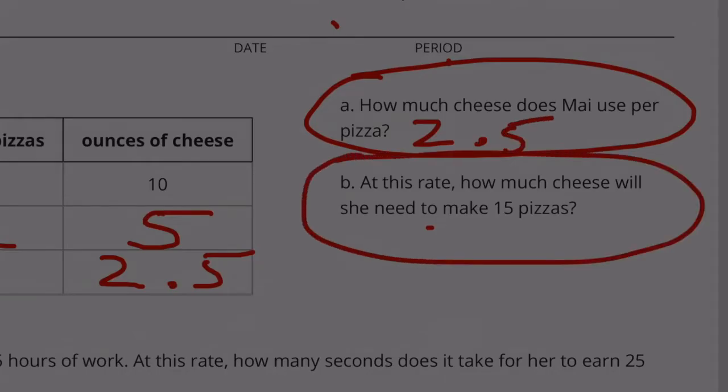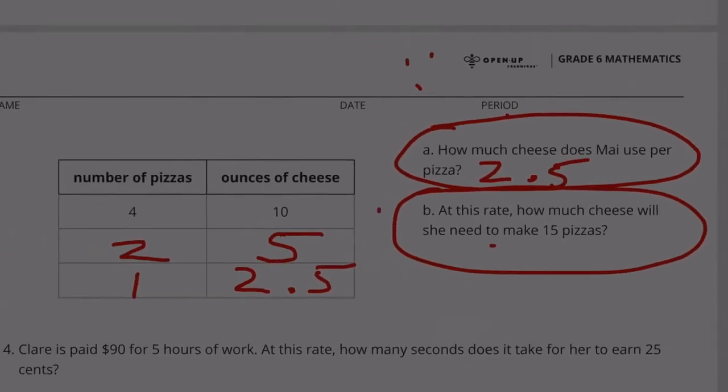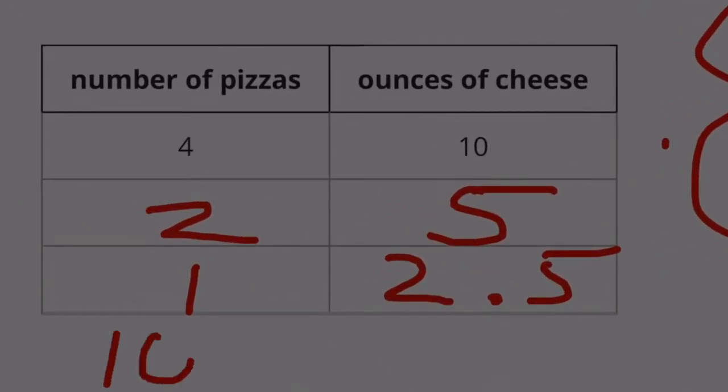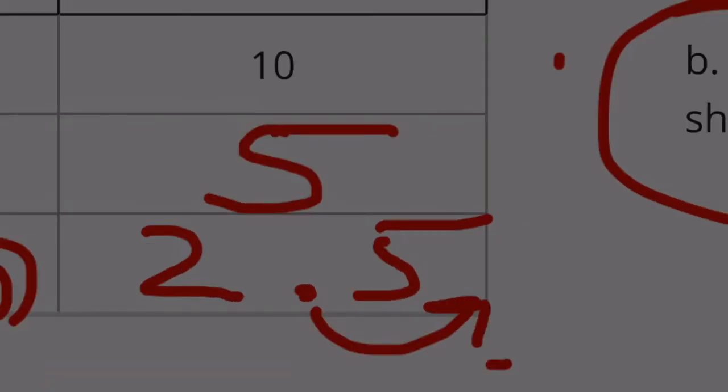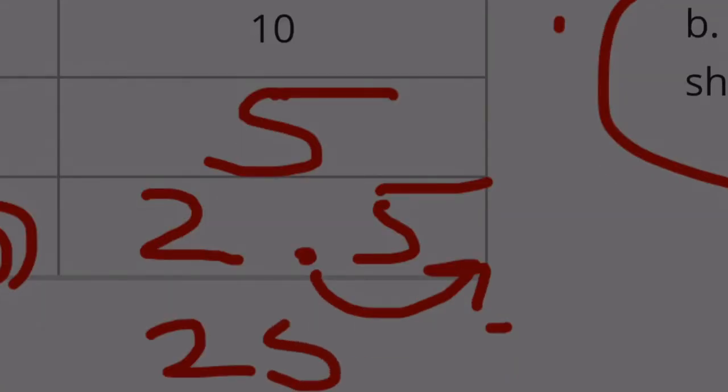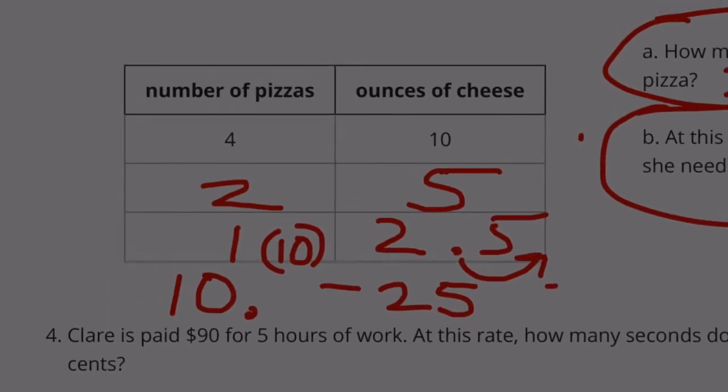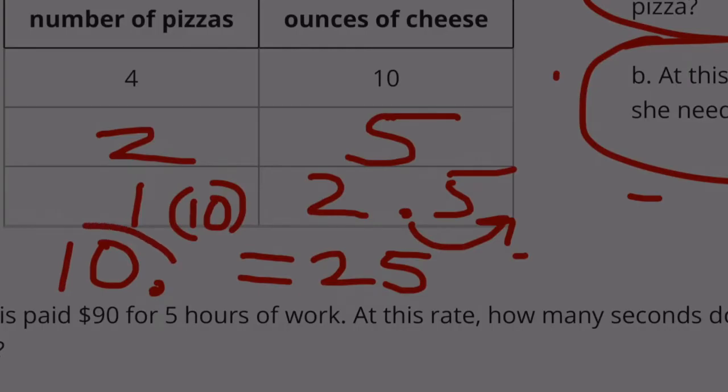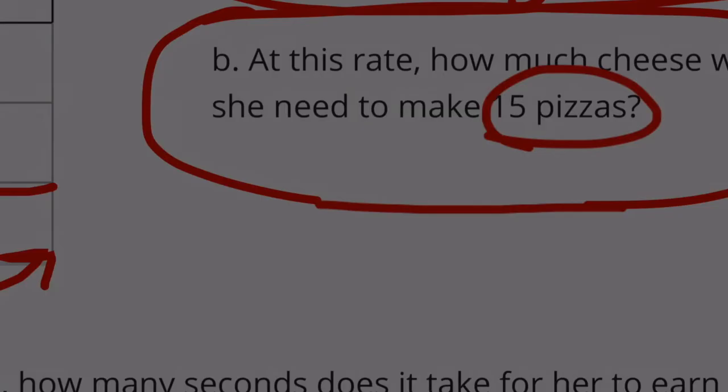B. At this rate, how much cheese will she need to make 15 pizzas? 10 pizzas. That would be 10 times bigger than 1. So she would use 10 times more cheese. Instead of 2.5 ounces, it would be 25 ounces, because we moved the decimal over one place to make it 10 times larger. So 10 pizzas would equal 25 ounces of cheese. Well, this was for 10. We need to find out for 15. So we need 15 pizzas. Well, we know that 10 is 25.